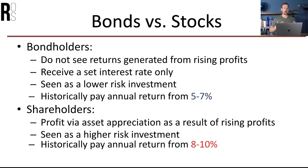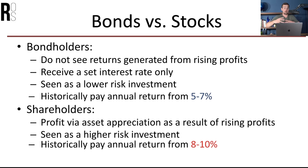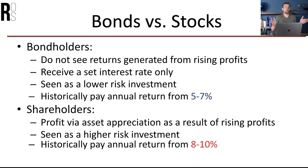Bond holders do not see returns generated from rising profits. A bond holder is literally just a debt obligation that company has. So if a bond holder let a company borrow money, and they used that money to acquire another company, and then the company doubled in value, the bond holder is going to see no gains from that. They're just gonna get that set or variable rate of return that was agreed upon when that debt was issued. They have no equity, no skin in the game — just like a bank that loans money and gets paid back on the terms of the bond.